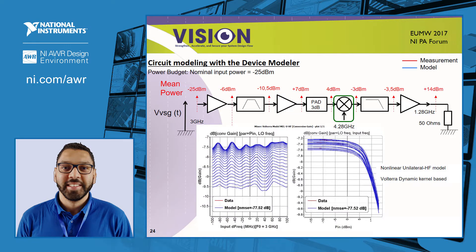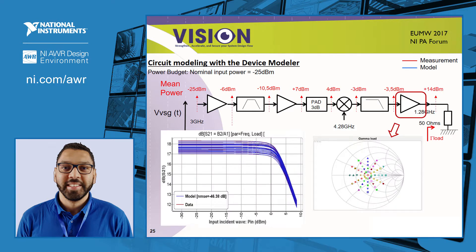We provide a model of mixer that takes into account the nonlinearity and the high-frequency memory effects between the RF and IF band for a fixed LO power level. Finally, I show an example of a bilateral model that takes into account the mismatch. For that, we measure the gain for different frequencies and gamma load presented at the output of the amplifier.